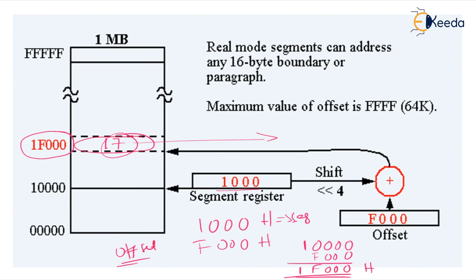Only if you know the physical address can you fetch the data available at that particular memory location. This is about physical address calculation. In the next class I will discuss the execution unit. I have explained the architecture, then the bus interface unit, and now physical address calculation. Next is the execution unit. If you understand this architecture, everything else becomes very easy.